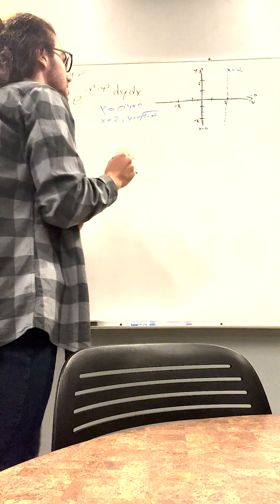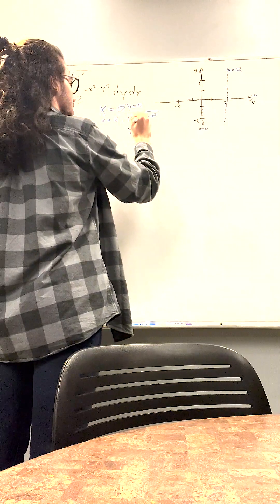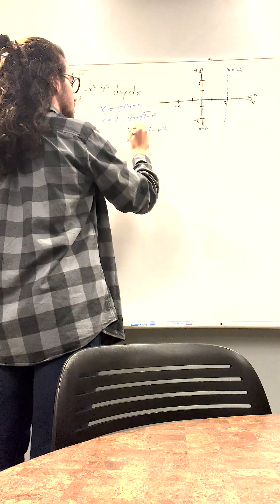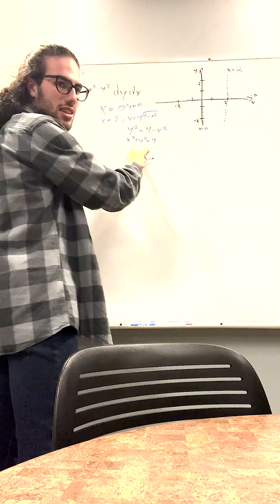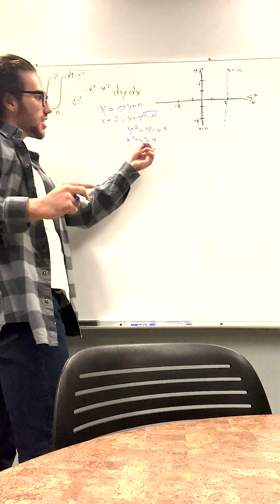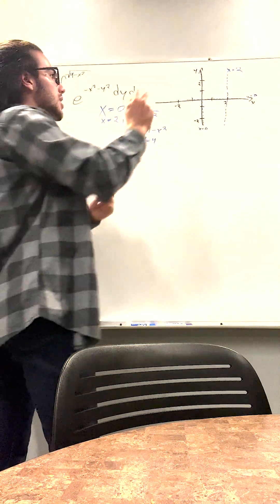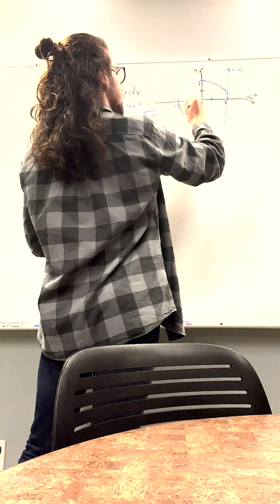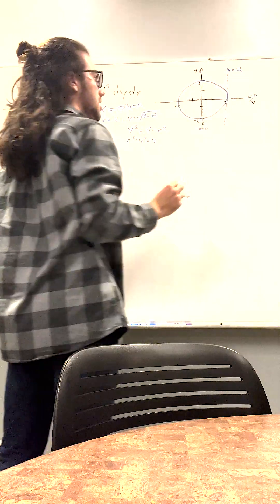You might not know how to solve this but if we just manipulate it a little bit. I hope you know what this is. This is the equation of a circle with radius square root of 4 which is 2. Perfect circle.